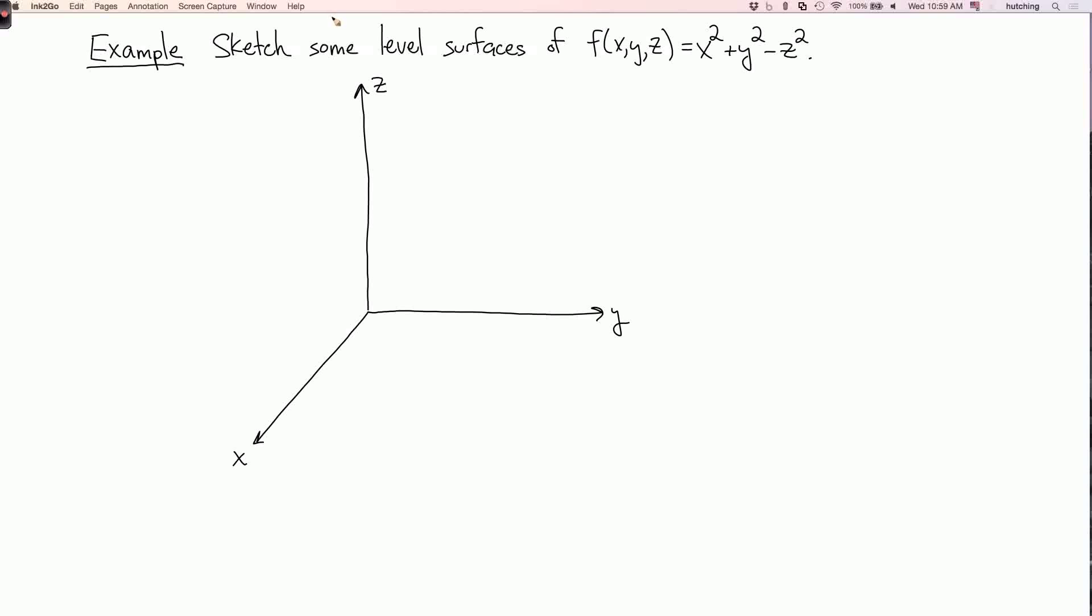For example, let's sketch some level surfaces of the function f of x, y, z equals x² + y² - z². Now if we set f equals zero, then we get the equation x² + y² = z². And you'll remember from the unit on quadric surfaces that this is a cone.